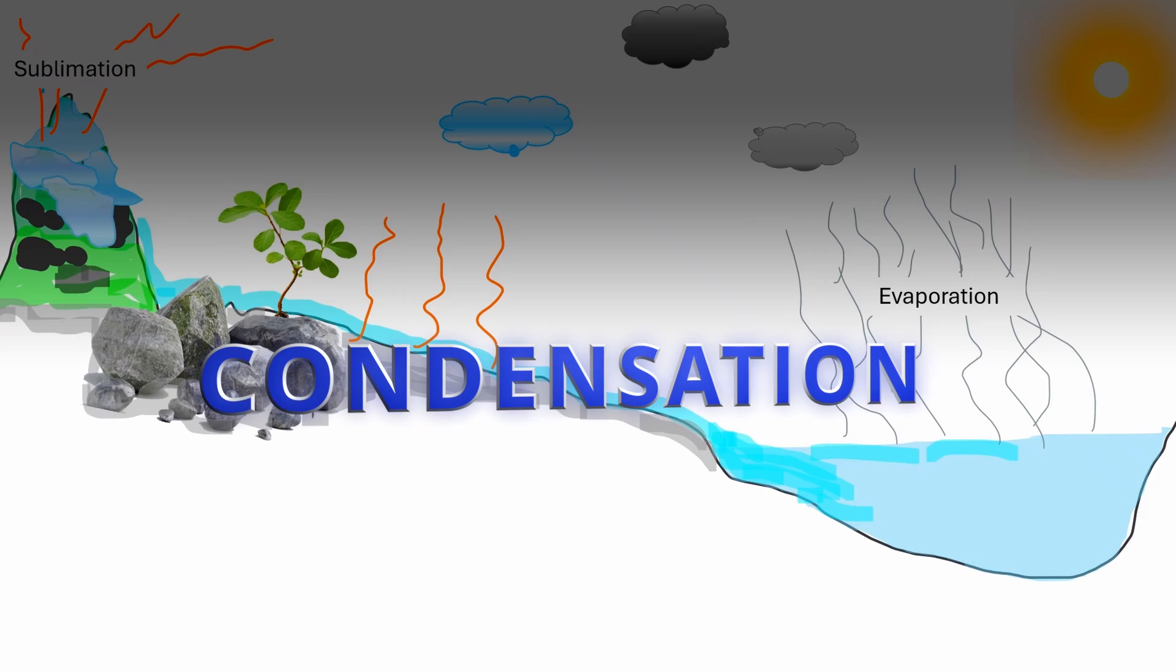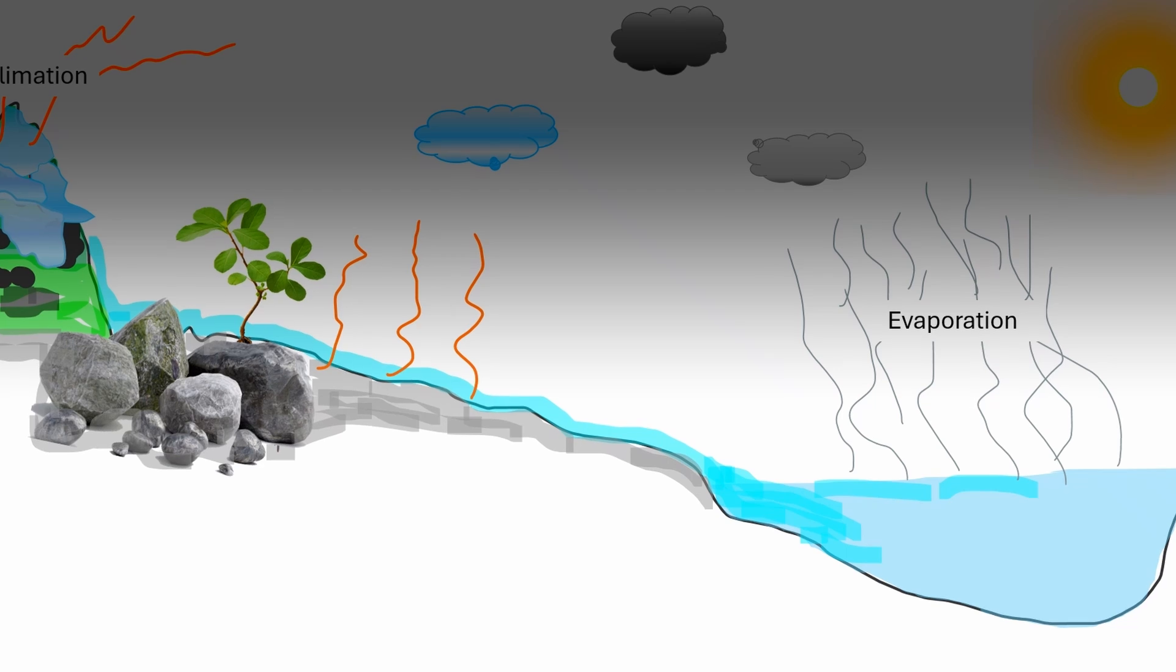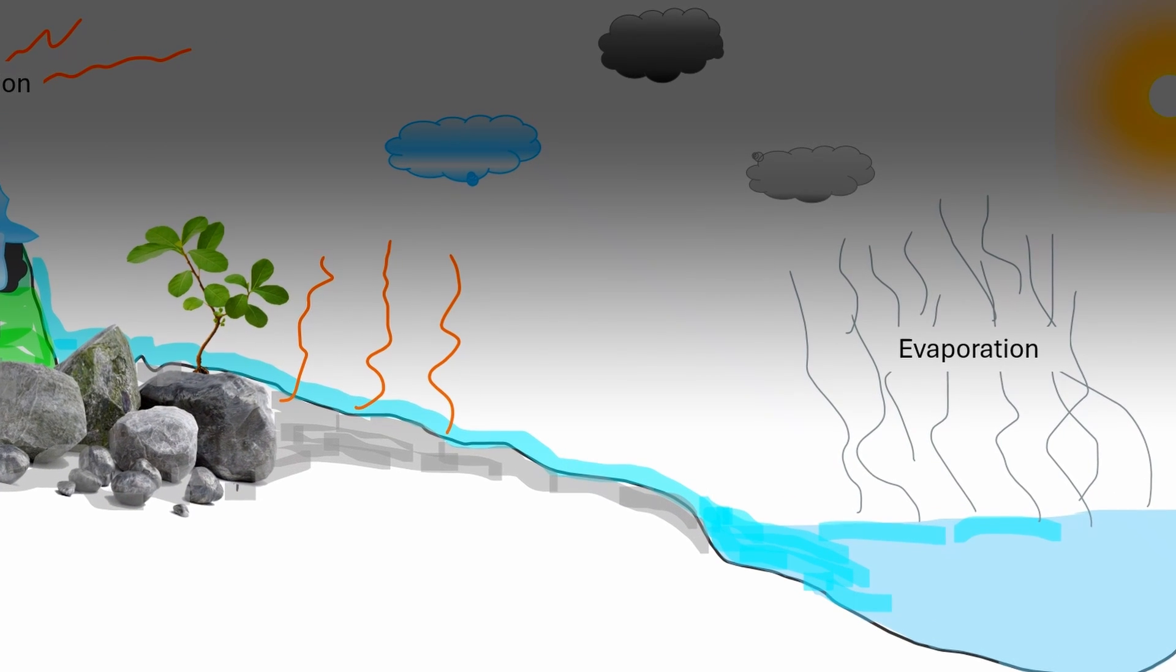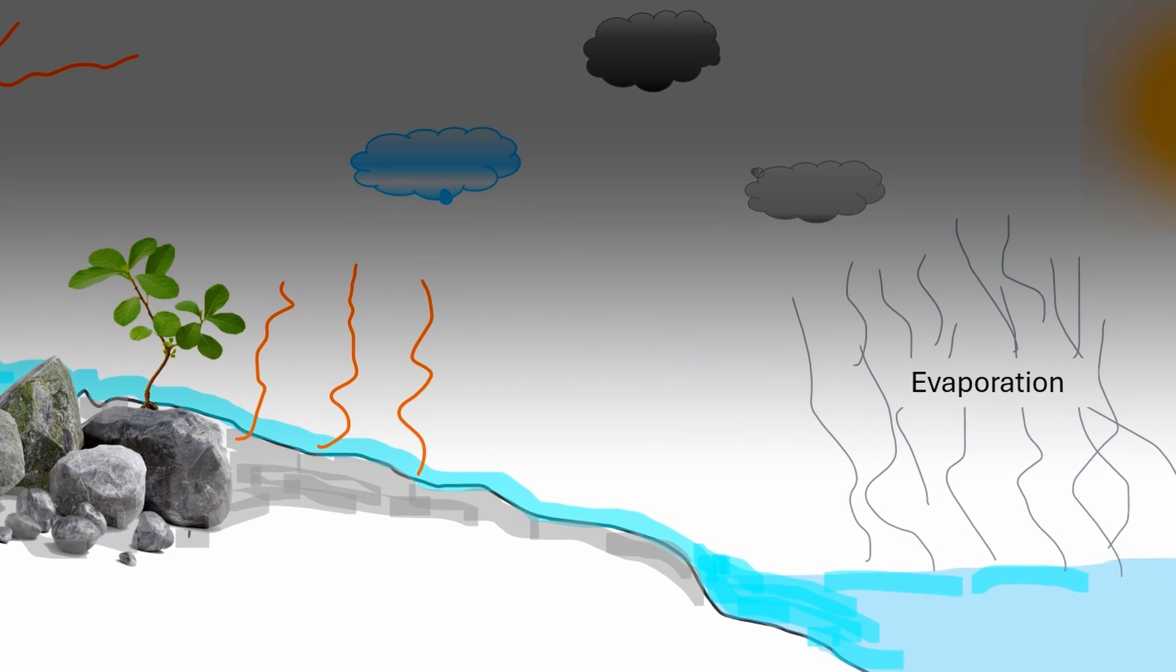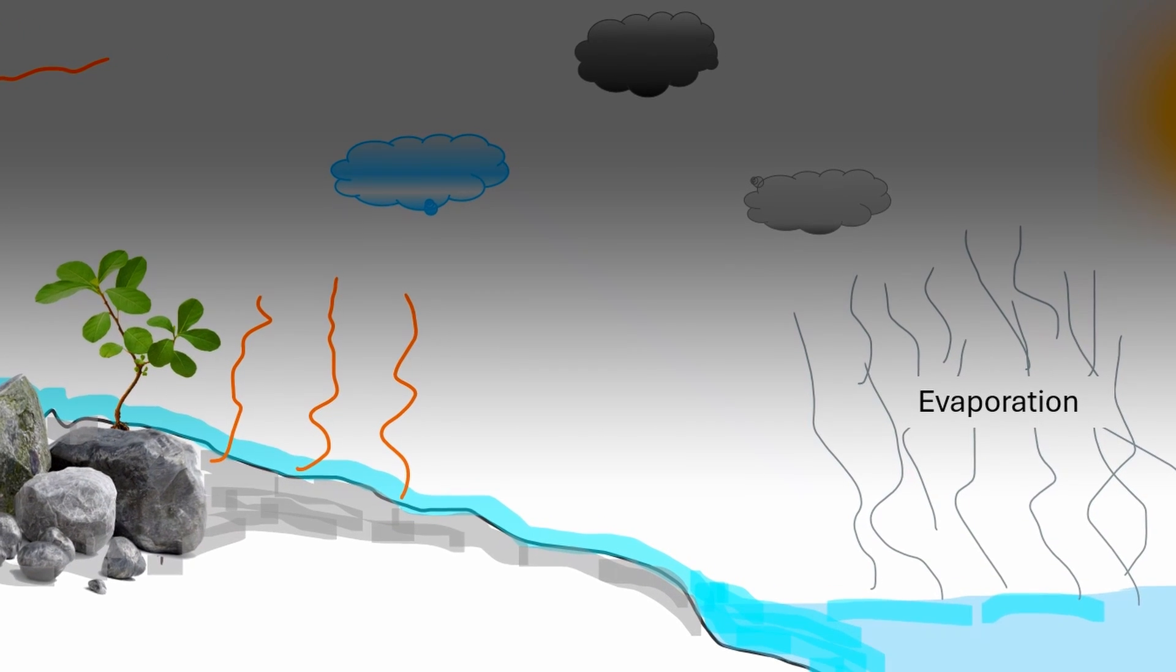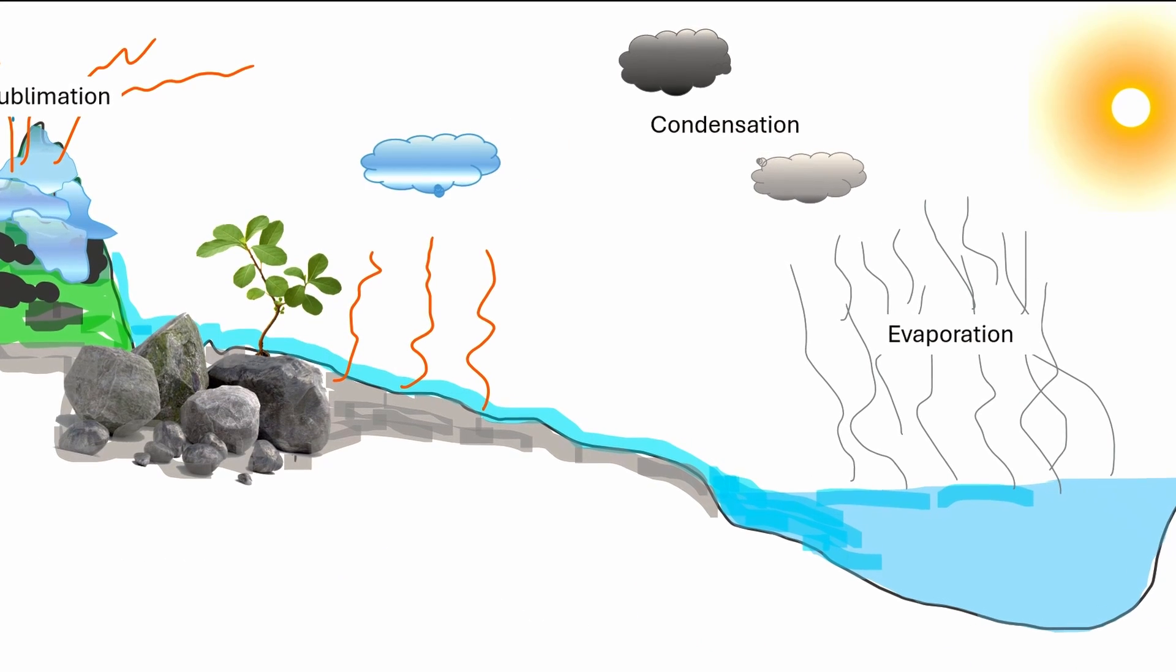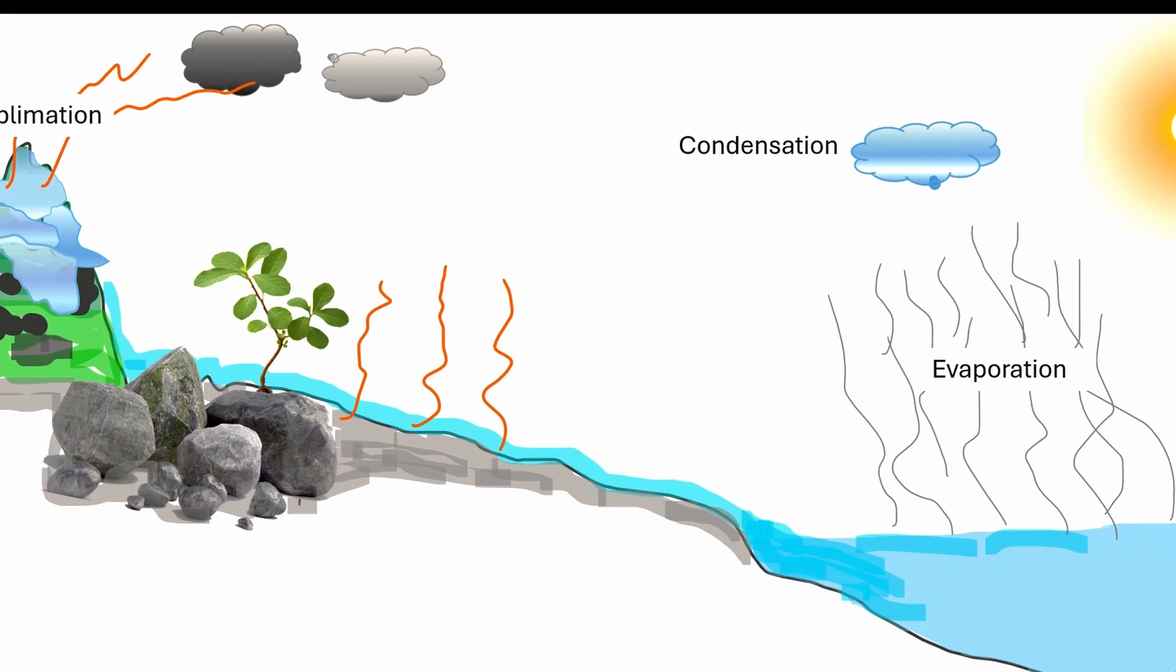Condensation: As water vapor rises higher in the atmosphere, it cools down due to lower temperatures at higher altitudes. This cooling causes the water vapor to lose energy and change back into tiny water droplets, forming clouds. Condensation is the process of converting water vapor into liquid water.